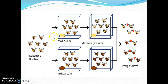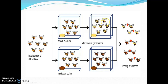Through this example you can easily understand: this is the initial sample of fruit flies. They are kept in a starch medium and in a maltose medium — both are carbohydrates. Maltose is a basic disaccharide and starch is a polysaccharide. So after several generations, what actually happens is a mating preference develops. Many fruit flies will mate with those from the same medium, giving them two different sources.